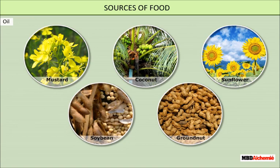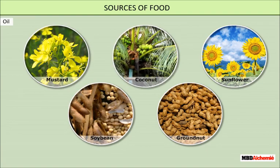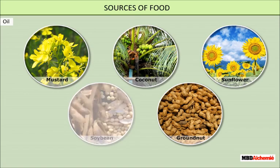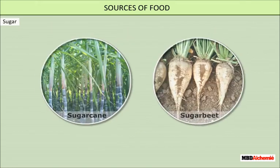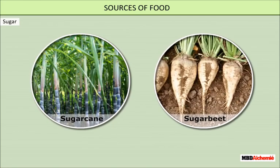Tea and coffee are popular beverages all over the world. We also get different types of oils from plants that are useful in cooking. These oils include mustard, coconut, sunflower, soya bean, and groundnut. Plants also give us sugar, which we manufacture mainly from sugarcane and sugar beet.